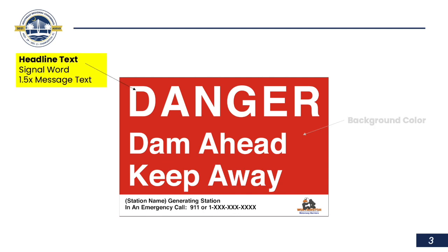Once we move from color, we want to start thinking about what words are going to be on our signs. The first word is our headline word, also known as your signal word. This is something that's going to convey instant understandability. On a danger sign, we want the word 'danger.' On a warning sign, we want the word 'warning.' It can't be any simpler than that.